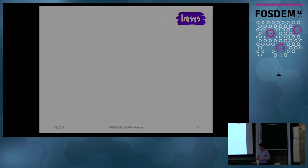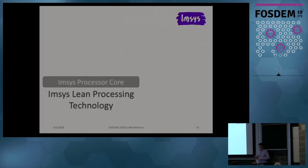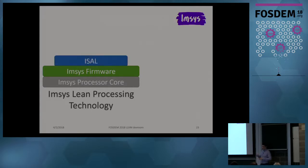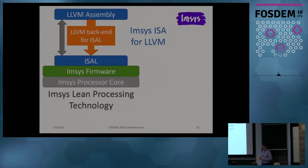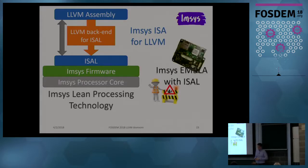To wrap up: I talked about our core technology — the MCC processing technology — our operation-oriented hardware architecture, the processor core. Then our firmware, which is based on microcode and implements the actual instruction set architecture tailor-made for LLVM assembly. I also talked about how we use the LLVM backend to efficiently and simply generate efficient code for ISA-L. ISA-L and the software ecosystem around it is still work in progress — not available yet — but we plan to release it as an upgrade for our IMSIS AMBLA device sometime in the next year.